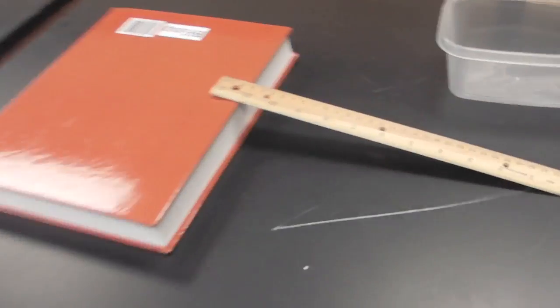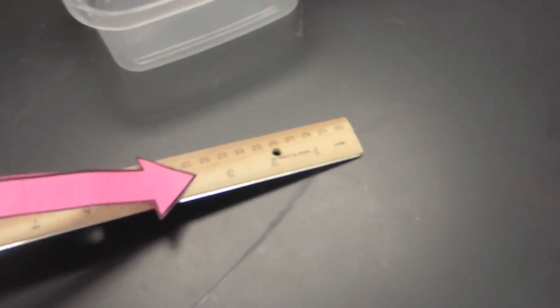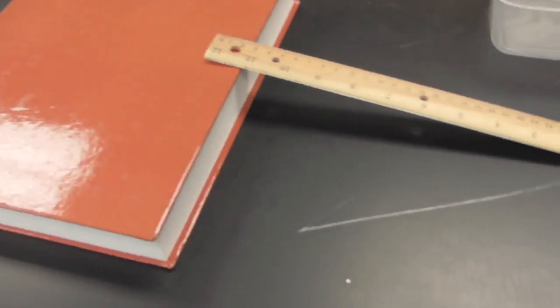So the ramp is nothing more than a 12 inch ruler, it's got a little groove right down the middle of the ruler, that's where the marble is going to roll, and then it's just resting on a book, and that's going to roll across the table, off the table.